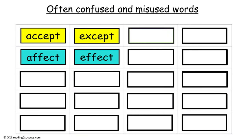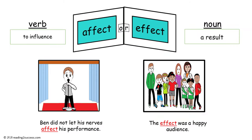Our second pair of often confused and misused words are affect and effect. Affect, spelled A-F-F-E-C-T, is a verb and it means to influence. In this example, Ben did not let his nerves affect his performance — meaning he did not let his nerves influence his performance. The word effect, spelled E-F-F-E-C-T, is a noun and it means a result. In this example, the effect was a happy audience.